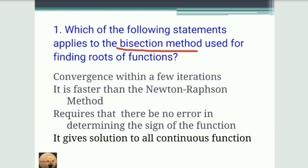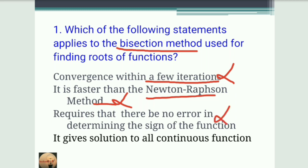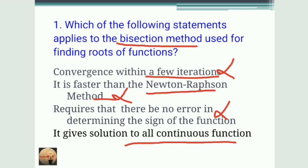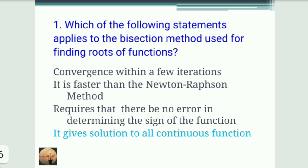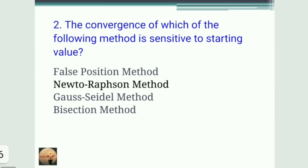Looking at the options: 'Convergence within a few iterations' — no, the bisection method takes a large number of iterations. 'It is faster than Newton-Raphson' — no, Newton-Raphson is faster. 'It requires no error in determining the sign of the function' — also not true. The correct answer is the last option: it gives solution to all continuous functions, applicable for both transcendental and polynomial functions.